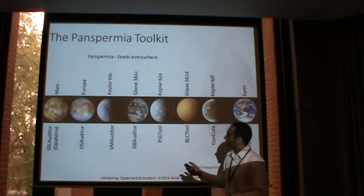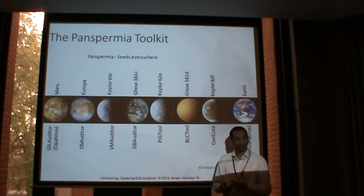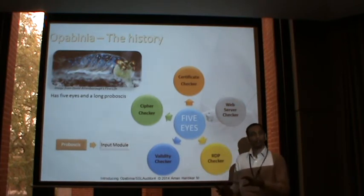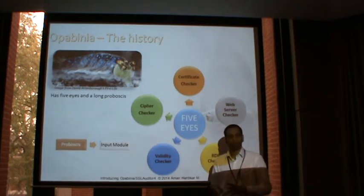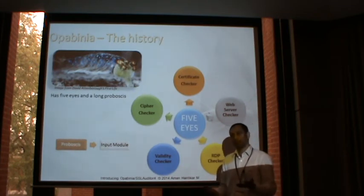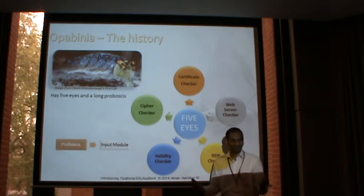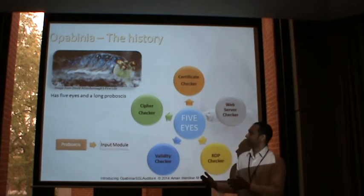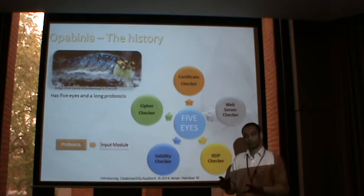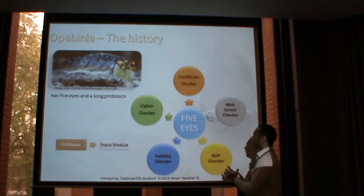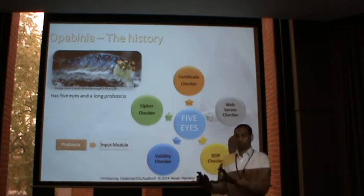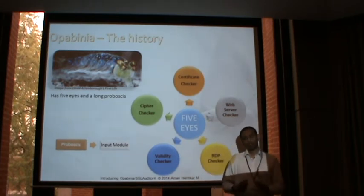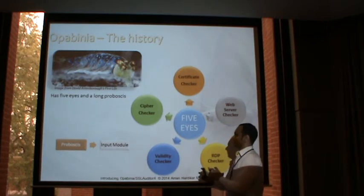SSL Auditor is also called Opabinia. Opabinia is one of the early sea creatures that lived around 500 million years ago; it has five eyes, mainly to escape from a big predator called Anomalocaris. It can also find food more easily with five eyes, and it has a long proboscis which it uses to fetch food that is difficult to reach. My tool has five modules to check for various issues on services — relating to Opabinia's five eyes — and its input module is very flexible, relating to the long proboscis.